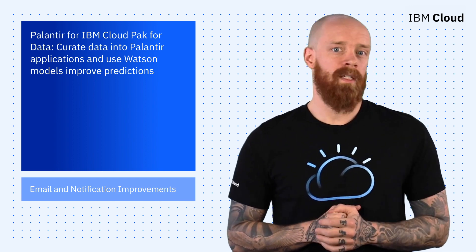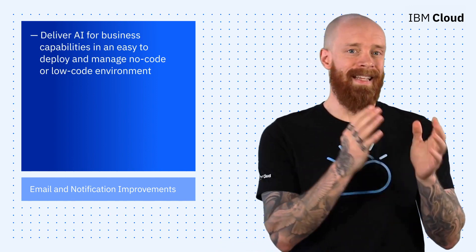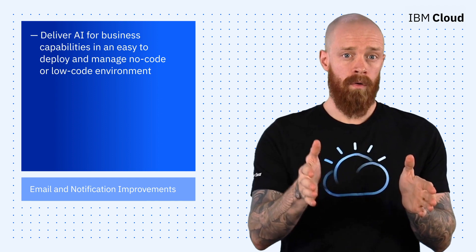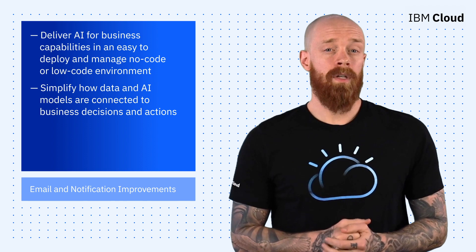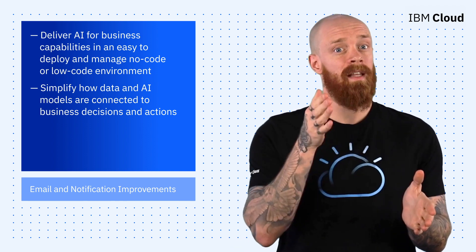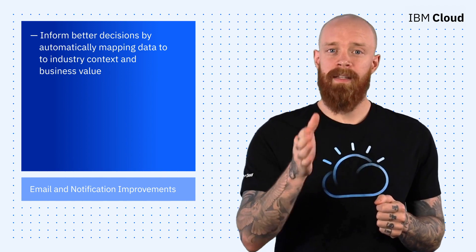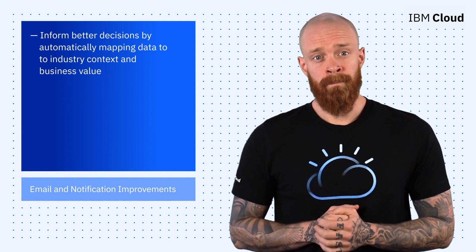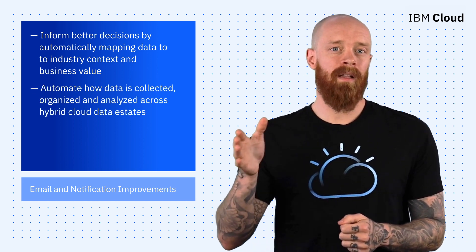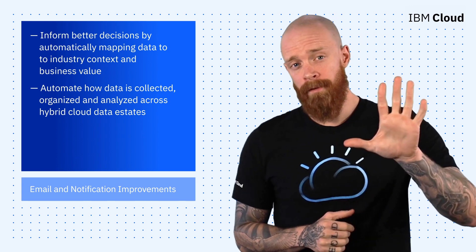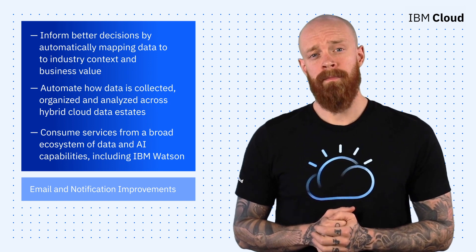Let's quickly look at five things this service is designed to do. Number one, deliver AI for business capabilities in an easy-to-deploy and manage no-code or low-code environment. Number two, simplify how data and AI models are connected to business decisions and actions. Number three, inform better decisions by automatically mapping data to industry context and business value. Number four, automate how data is collected, organized, and analyzed across hybrid cloud data estates. And number five, consume services from a broad ecosystem of data and AI capabilities, including IBM Watson.